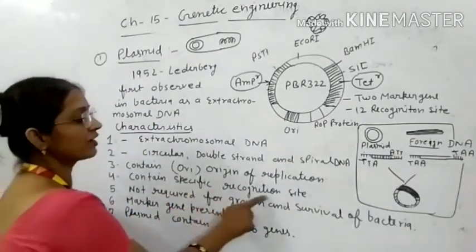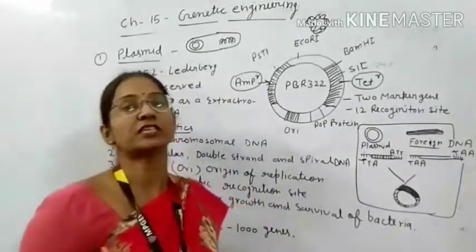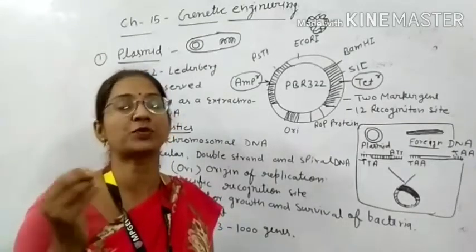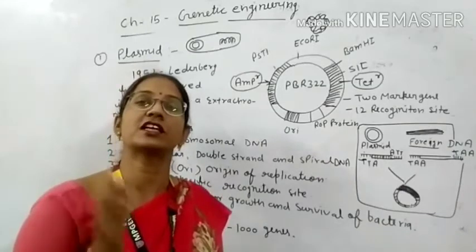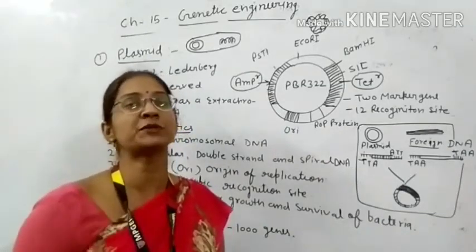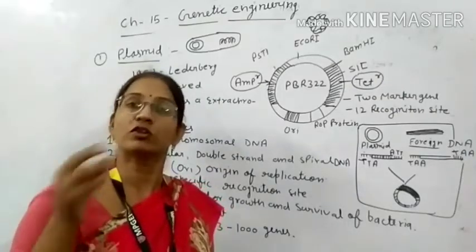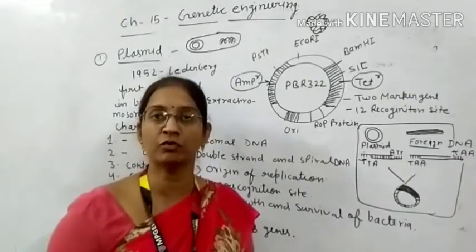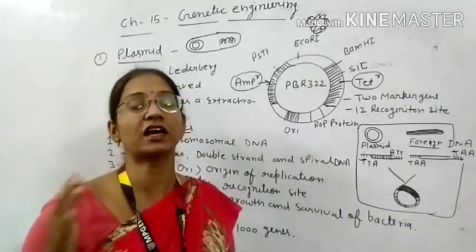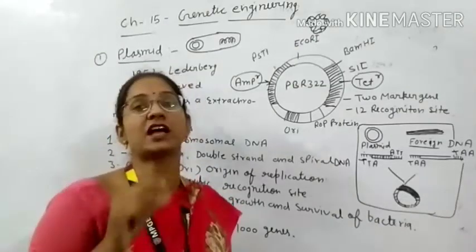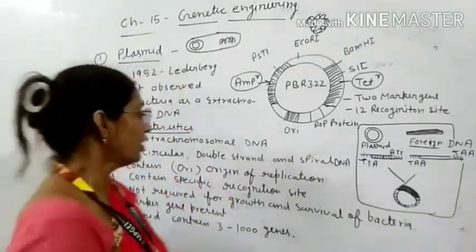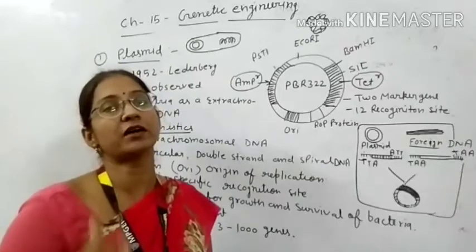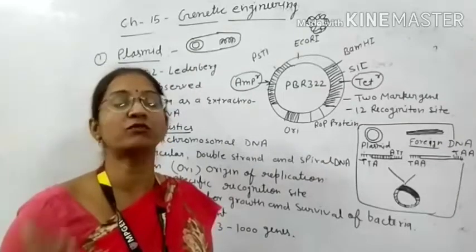Fourth, it contains a specific recognition site. The recognition site — also called the restriction site — is where the restriction enzyme cuts. The restriction enzyme will use this special site to cut the plasmid at a specific location, which is required when we want to insert our desired gene.